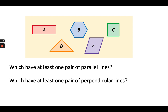Looking at E, we have a rhombus, and the top and bottom would be parallel, as well as the sides. So figures A, B, C, and E all have at least one pair of parallel lines.